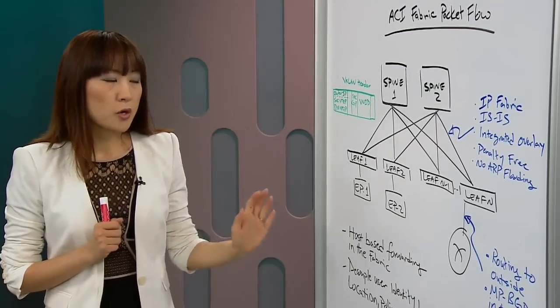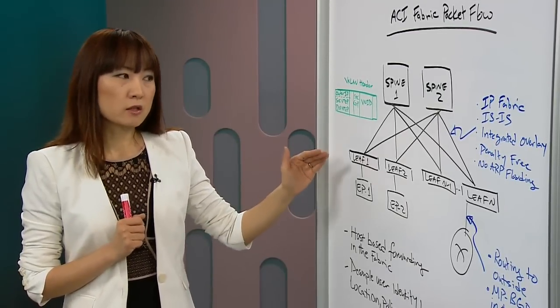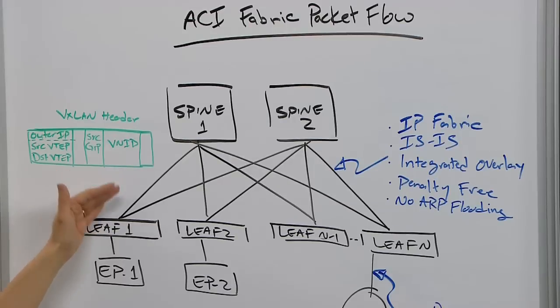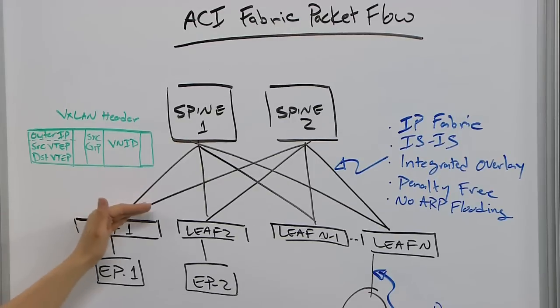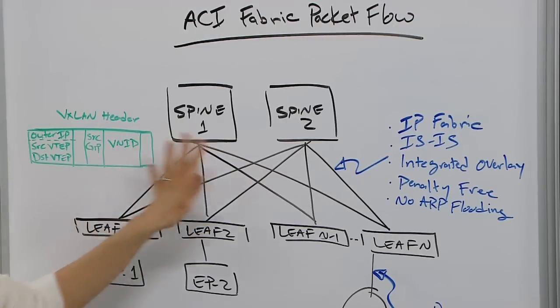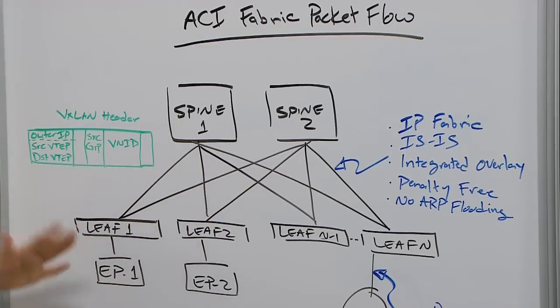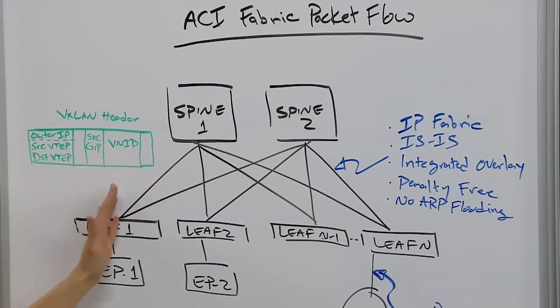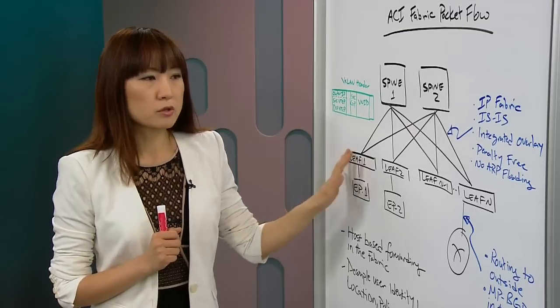To transport tenant traffic across the IP Fabric, we use integrated VXLAN overlay. And it's penalty-free because all the forwarding is done in hardware, and we eliminate ARP flooding within the Fabric. We translate the broadcast ARP traffic coming from the endpoint or end hosts into unicast ARP in the Fabric. So there's no ARP flooding.